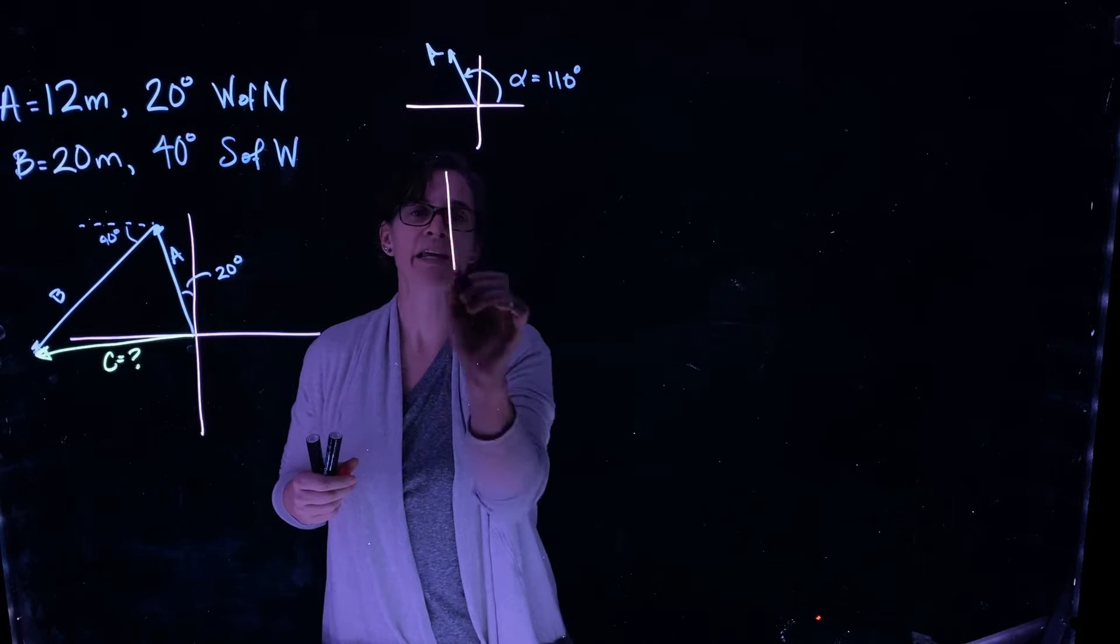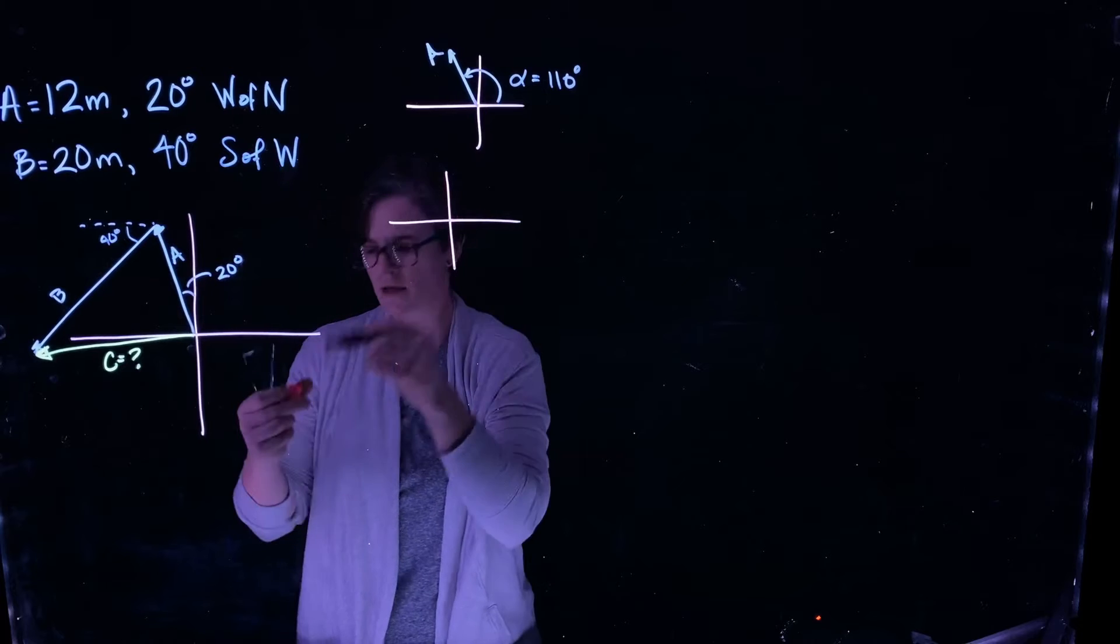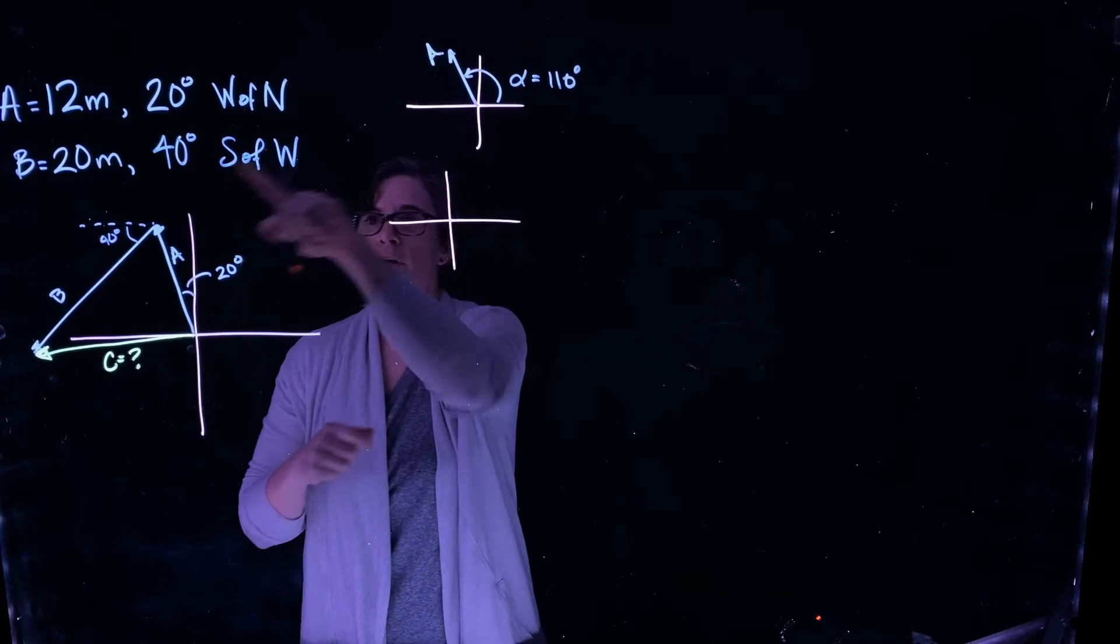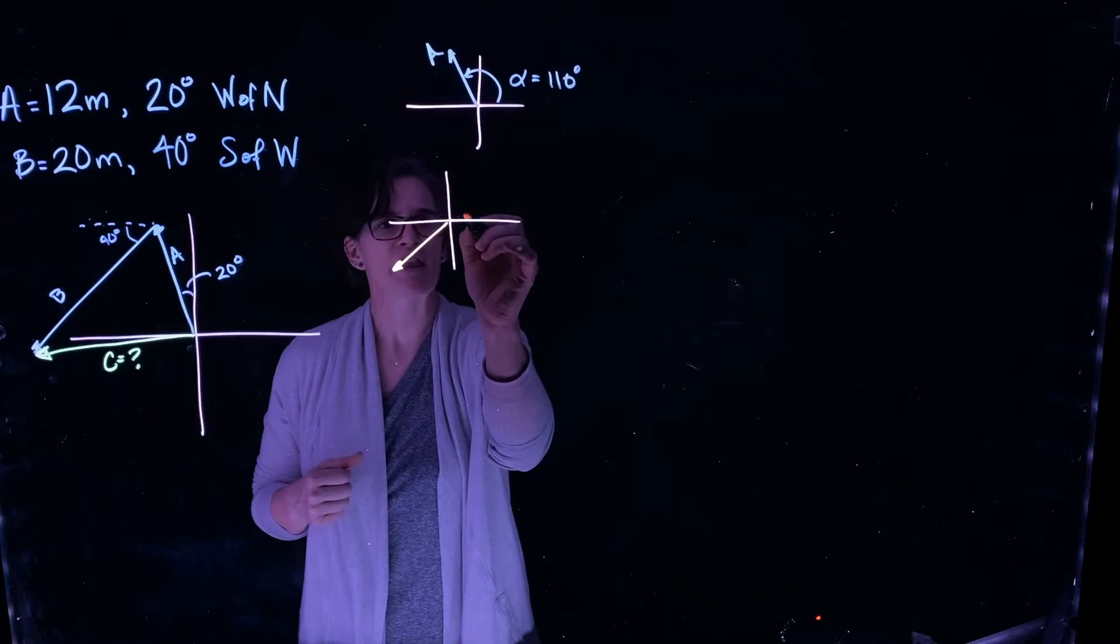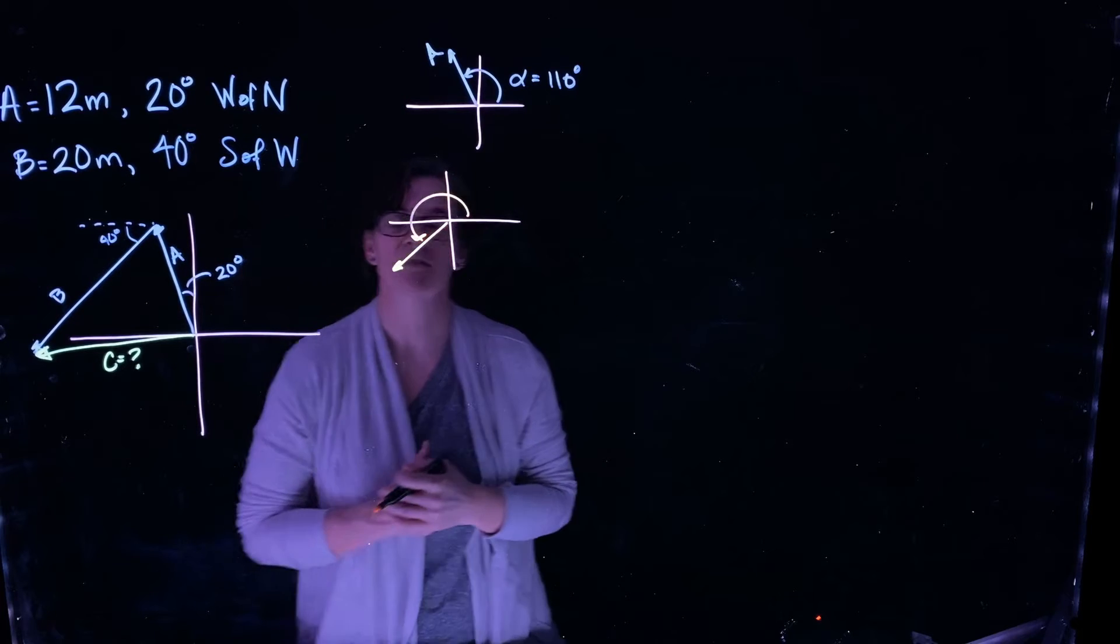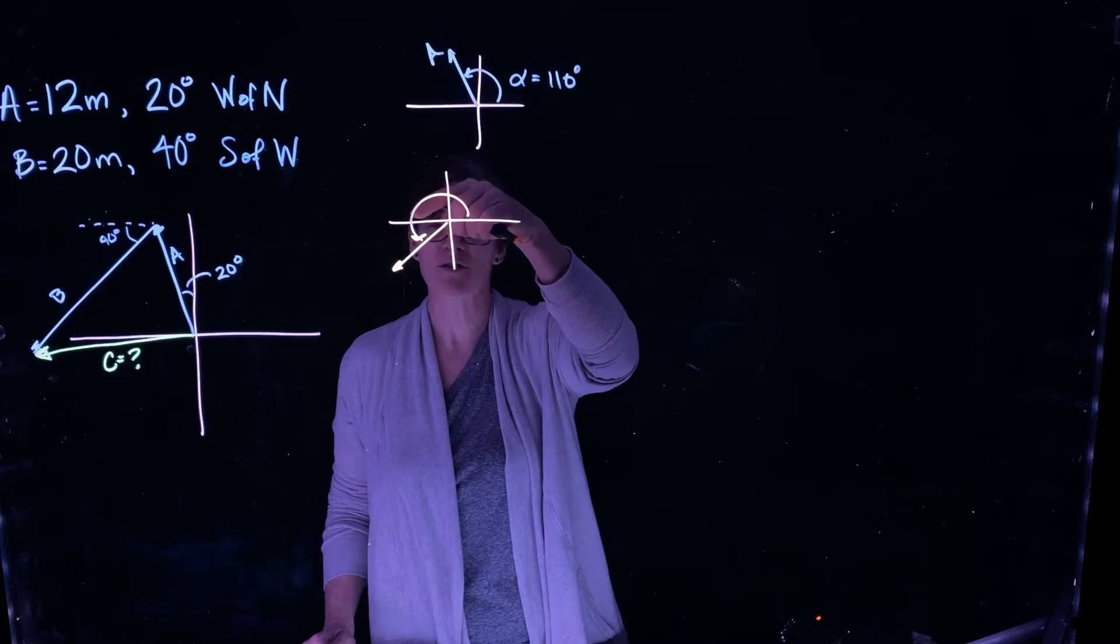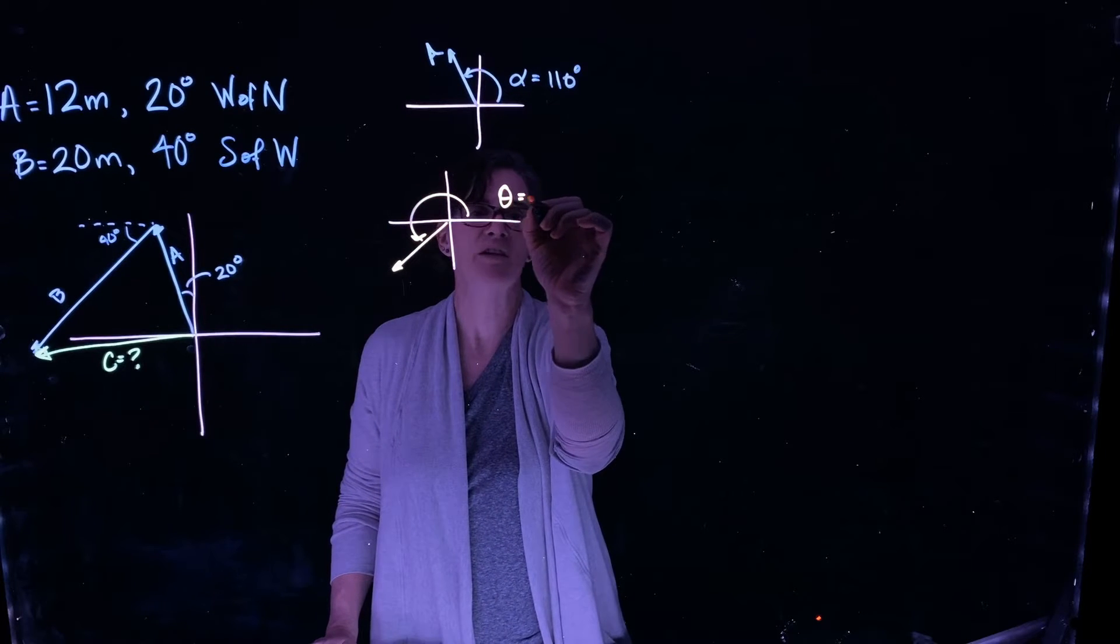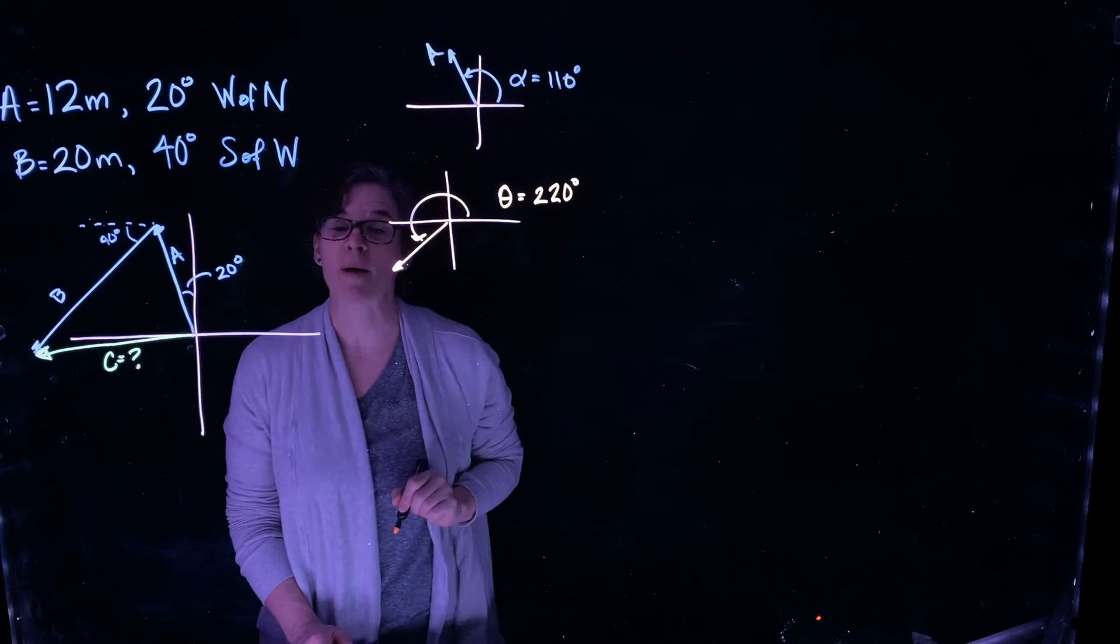What about vector B? Well, for vector B, if I just don't worry about it head to tail, but just take that vector and say vector B is 40 degrees south of west at a magnitude of 20, that's this angle relative to the positive x-axis. So that's 180 degrees plus an additional 40 degrees. My angle is 220 degrees relative to the positive x-axis.